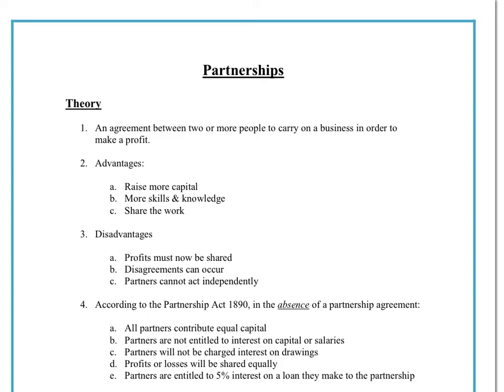A sole trader may decide to take on a partner, which is going to enable them to raise more money or more capital. It might enable them to specialise in different areas which they are good at. As a sole trader you'd have to do everything yourself and be multi-skilled — good at marketing and finance — whereas if you take on between two and twenty partners, each partner can specialise in an area that they are an expert in.